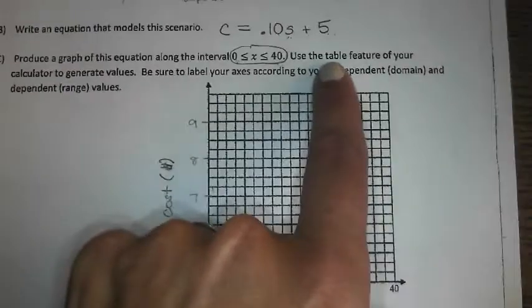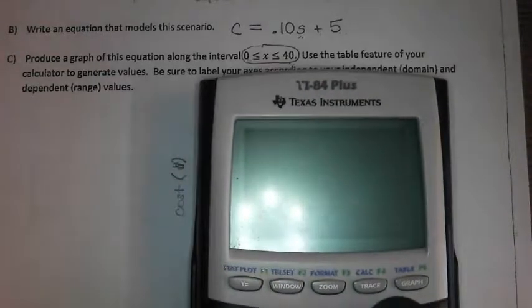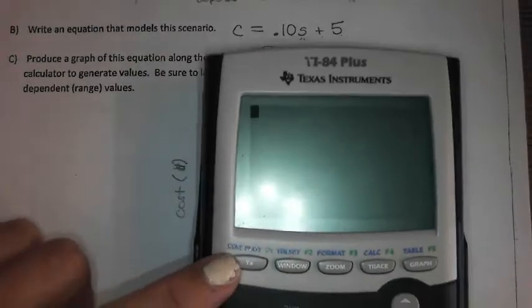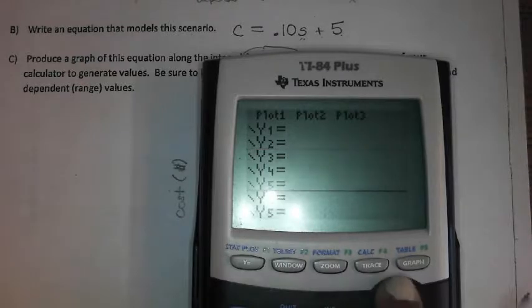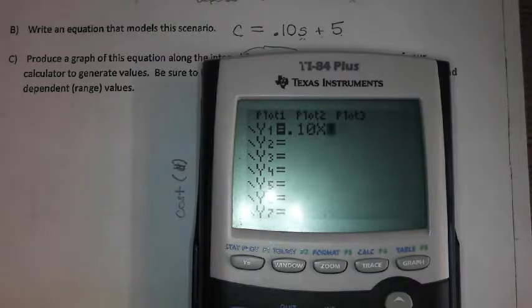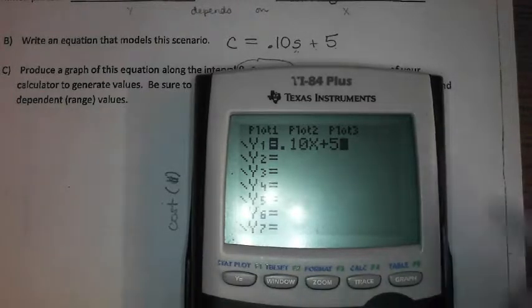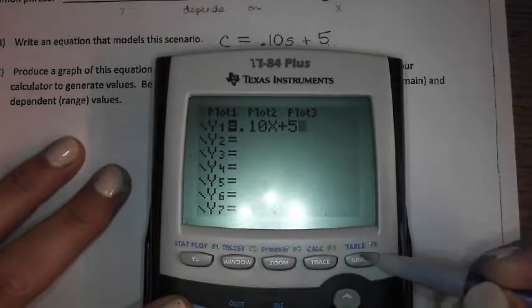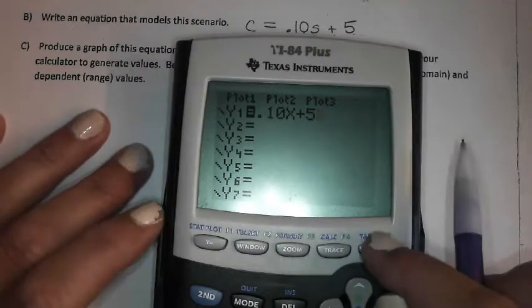Now it says to use the table feature of your calculator. I think we know how to do that, but I definitely want to review it quickly. To use the table feature, you have to go to your Y equals. Go to your Y equals. If there's anything there, clear it out. We need .10 times our X. And then our table is in blue above graph. So we'd hit our second button and look at the table.